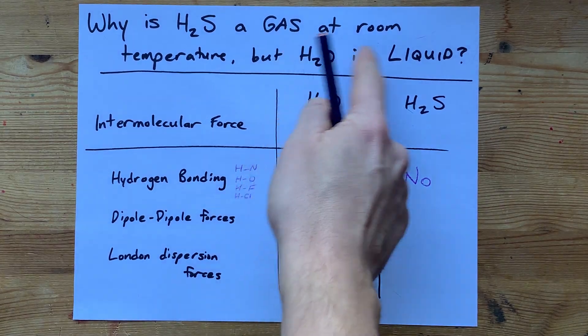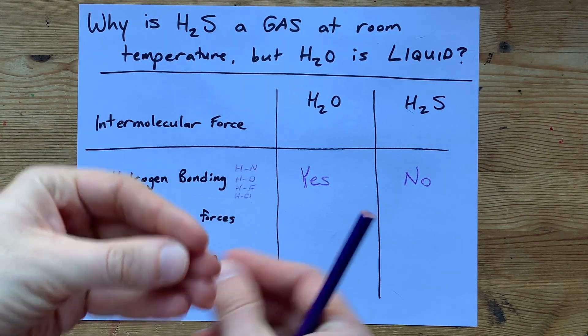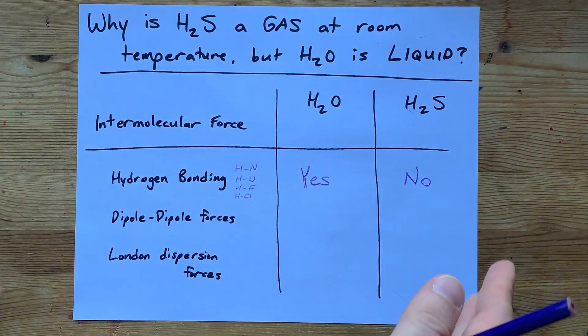And therefore, at room temperature, the water is able to condense into a liquid, and H2S, even though it's a heavier molecule, will be dispersed in gas form.